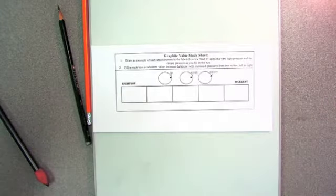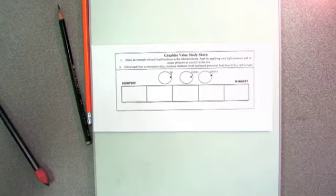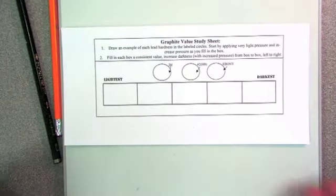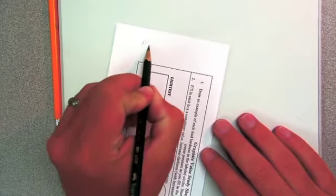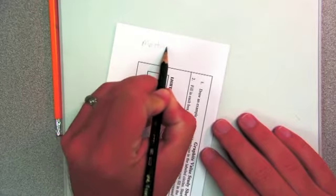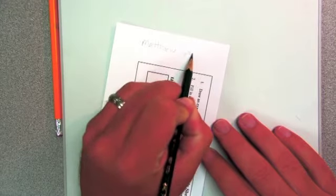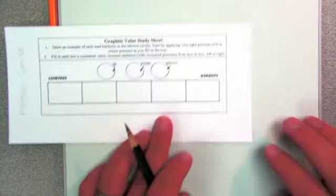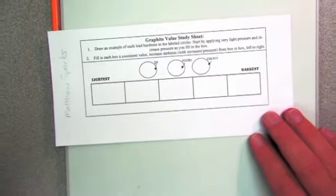So you're going to get one of these graphite value study sheets, and it is your chance to practice what a 2H looks like, and what a number two looks like, and what an ebony pencil looks like. The first thing I want you to do when you start—you're not starting now, you're just watching—you're going to write your name on it.